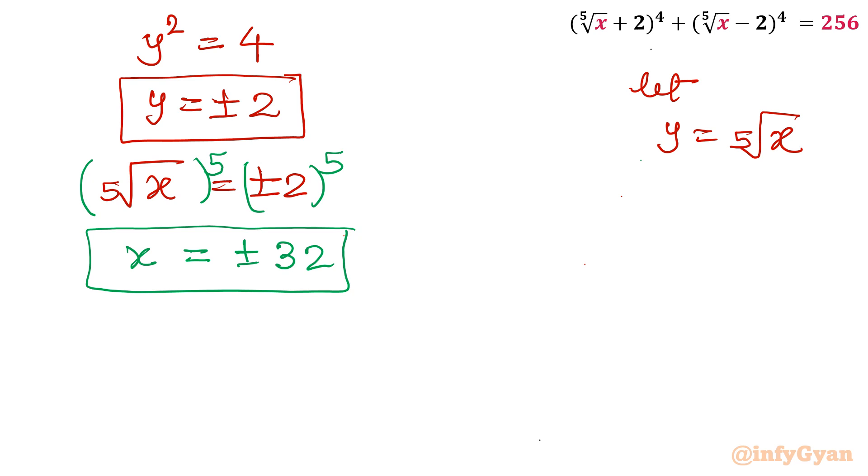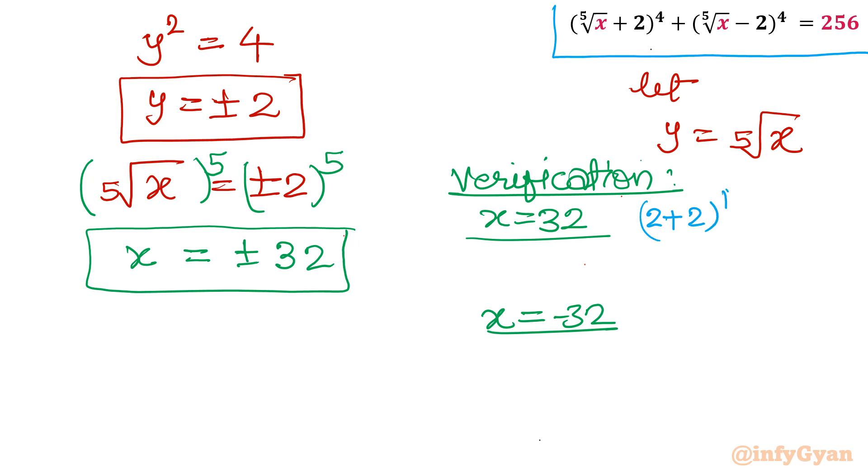This is our final answer for the value of x. Now let's verify the values. Let me put the first value x is equal to 32. Fifth root of 32 which is 2 plus 2 whole power 4 plus fifth root of 32 which is 2 minus 2 whole power 4. So it is 4 power 4 plus 0. 4 power 4 is 256. Hence verified.